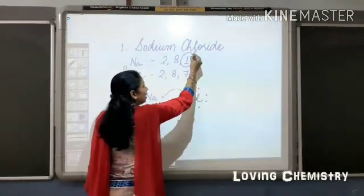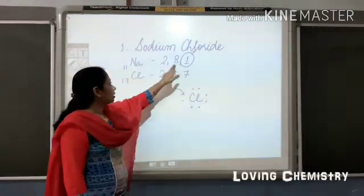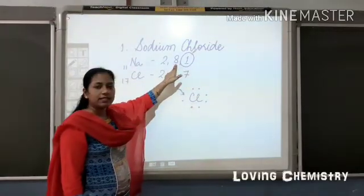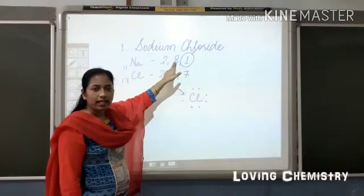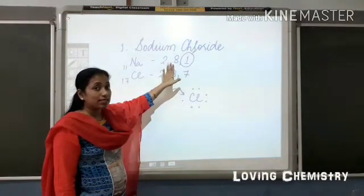And when this one electron goes away from sodium, now sodium ion will have its octet. Eight electrons in its outer shell which shows its stability.